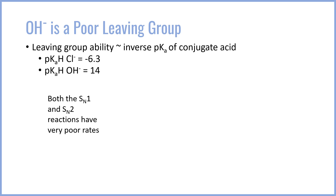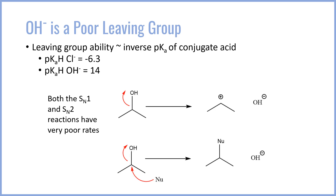As a result, OH- is about 10 to the 20.3-fold worse leaving group than chloride anion — it's quite terrible. Both the SN1 and SN2 reactions have poor rates because OH- is a poor leaving group. It doesn't matter whether the OH- is leaving to form a cation or whether a nucleophile is trying to push out OH- in an SN2 process. Both reactions are dependent on having a good leaving group, and OH will not leave without some sort of activation.